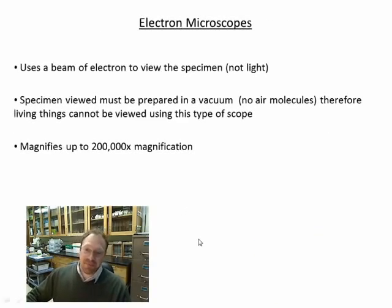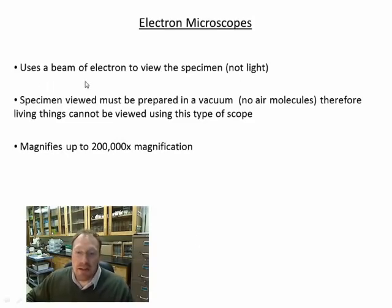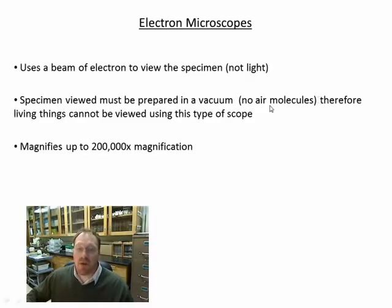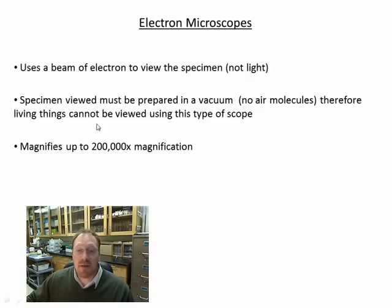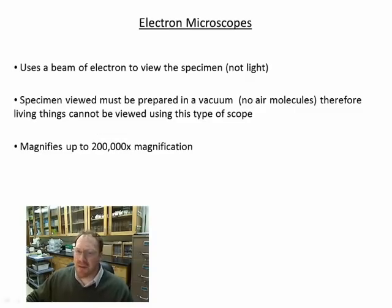Electron microscopes don't use light — they use a beam of electrons. In many instances the specimens have to be prepared in a vacuum, meaning all the air is pulled out of the chamber where the specimen is inserted. As a result, living things cannot generally be viewed using this type of scope. In some scanning electron microscopes you can use a partial vacuum, and sometimes you can see living objects, but they don't stay alive very long.